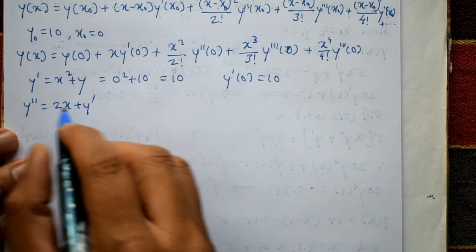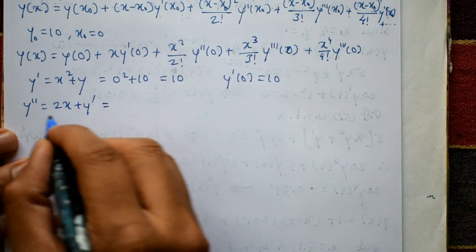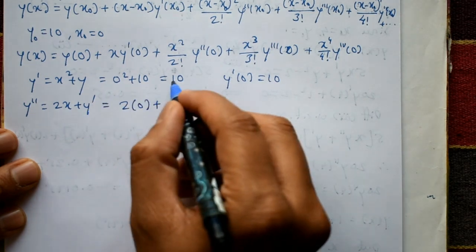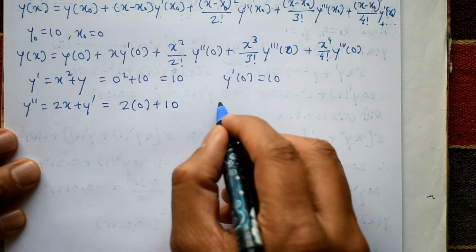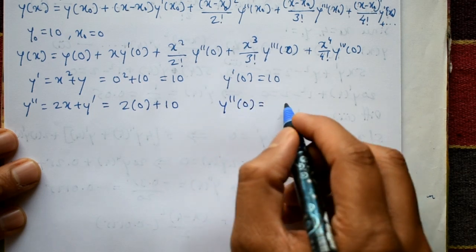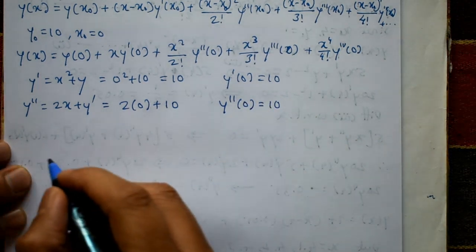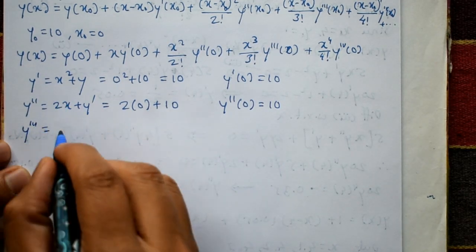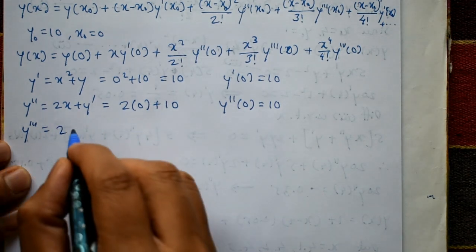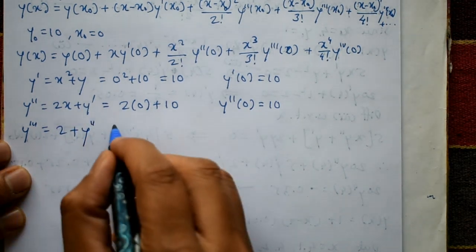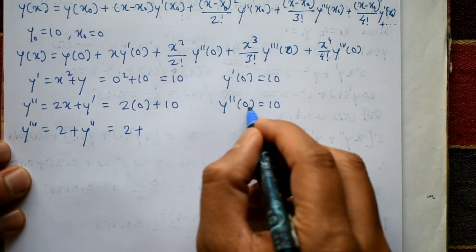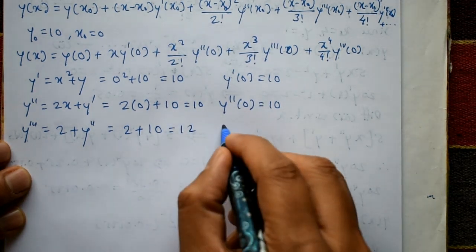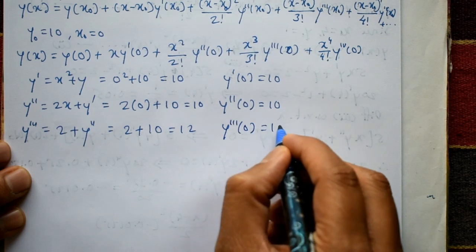Differentiating y' = x² + y, we get y'' = 2x + y'. Substituting x₀ = 0 and y'(0) = 10 gives y''(0) = 2(0) + 10 = 10. Differentiating again, y''' = 2 + y'', so y'''(0) = 2 + y''(0) = 2 + 10 = 12.